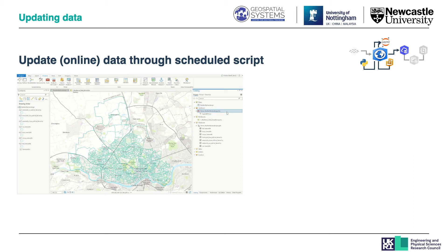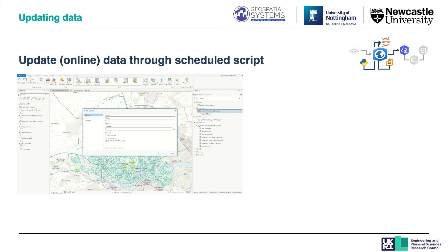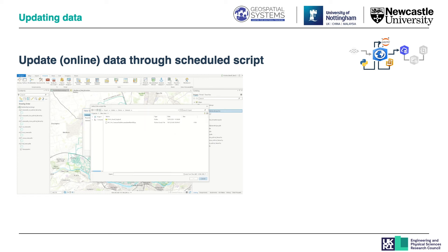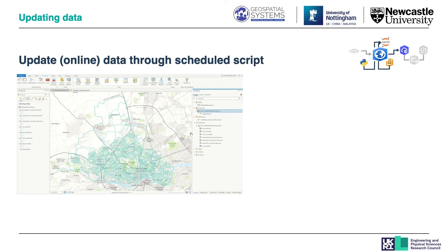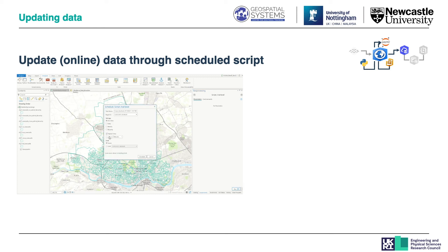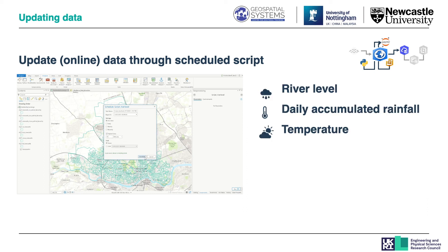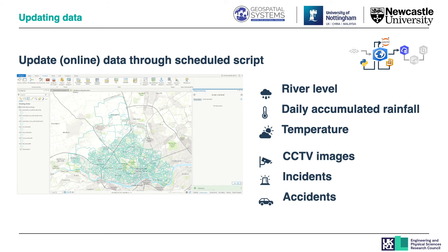Therefore, we can schedule a Python script in our geoprocessing toolbox in order to update dynamic datasets and then send the latest data to ArcGIS Online to use for our dashboards. We can create a new script or upload an already defined script. Later, we can schedule the script to run at a specific time. Those updates will be available in Operations Dashboard for the stakeholders to see. Potential datasets which will be updated are river level measures, daily accumulated rainfall, temperature, and in terms of traffic, the latest CCTV images, data on incidents and accidents.